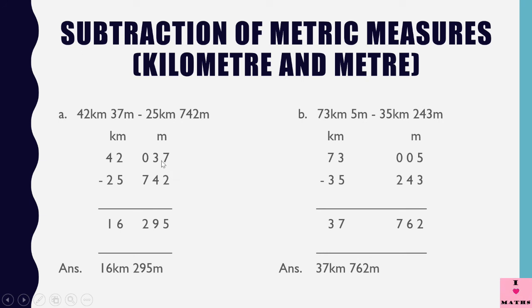7 minus 2 is 5. 13 minus 4 is 9. 9 minus 7 is 2. 11 minus 5 is 6. 3 minus 2 is 1. So 16 kilometers 295 meters is the answer. Note: 3 had to borrow from 0, but 0 had nothing, so 0 had to borrow from 2 — normal borrowing as in earlier classes.